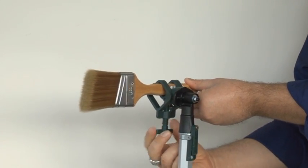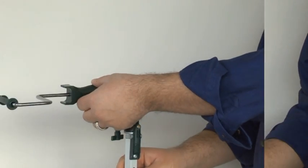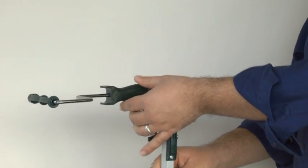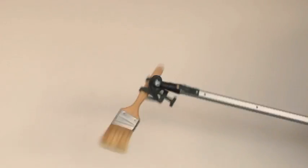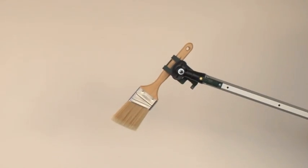The jaws of the F6333 adjust to securely hold any item up to 1 3/8 inch in diameter. That securely part is important. The last thing you want to do is drop a brush loaded with paint.